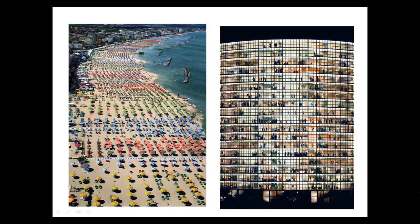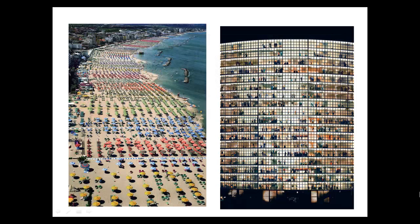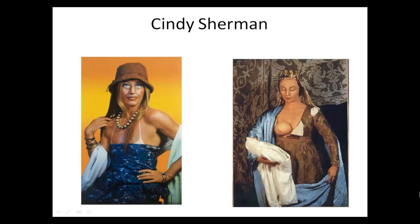Gursky loves to play with color and with pattern. You can see beautiful lines in both the left and the right images. He uses color to allow our eyes to bounce from one area to another, and he also uses repetition — umbrellas repeating right across the beach, and on the right, windows repeating not only up and down but across left to right and back again.